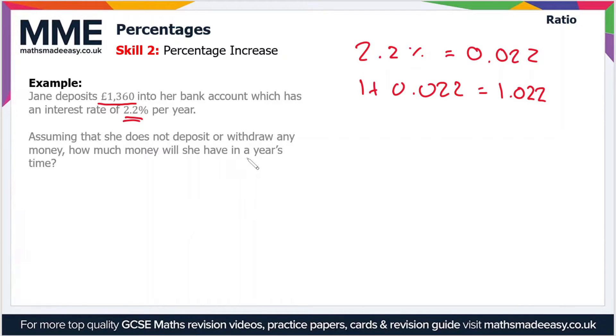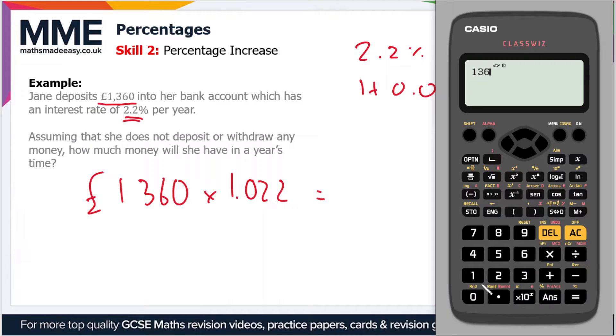Now if we multiply our original value of £1,360 by 1.022, that will give us the amount in the account after one year. So 1360 times 1.022 equals £1,389.92. That's how much is in the account after one year.